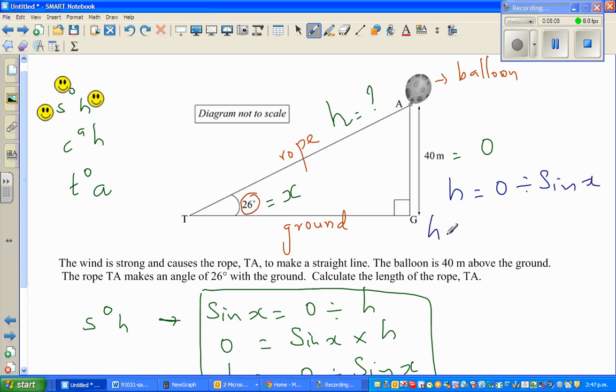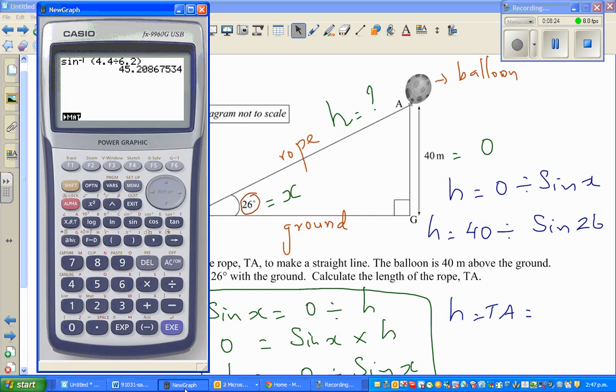So your H or TA, H is nothing but TA. Again, use the calculator: 40 divided by sine 26, which is 91 meters.